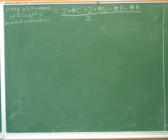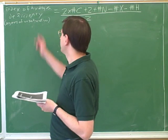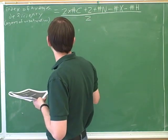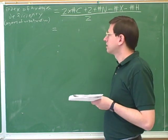We can do a couple examples of how to use this. So 2 times the number of carbons plus 2 plus the number of nitrogens. Then X stands for the number of halogens. And this could be called the index of hydrogen deficiency or the degrees of unsaturation.